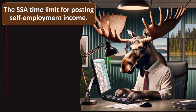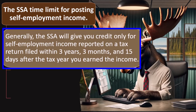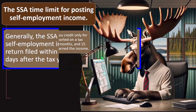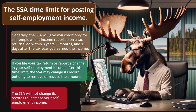The SSA — Social Security Administration — has a time limit for posting self-employment income. Generally, the SSA will give you credit only for self-employment income reported on a tax return filed within three years, three months, and 15 days after the tax year you earned the income — essentially a statute of limitations. If you file after this time limit, the SSA may change its record only to remove or reduce the amount — it will not increase your self-employment income.